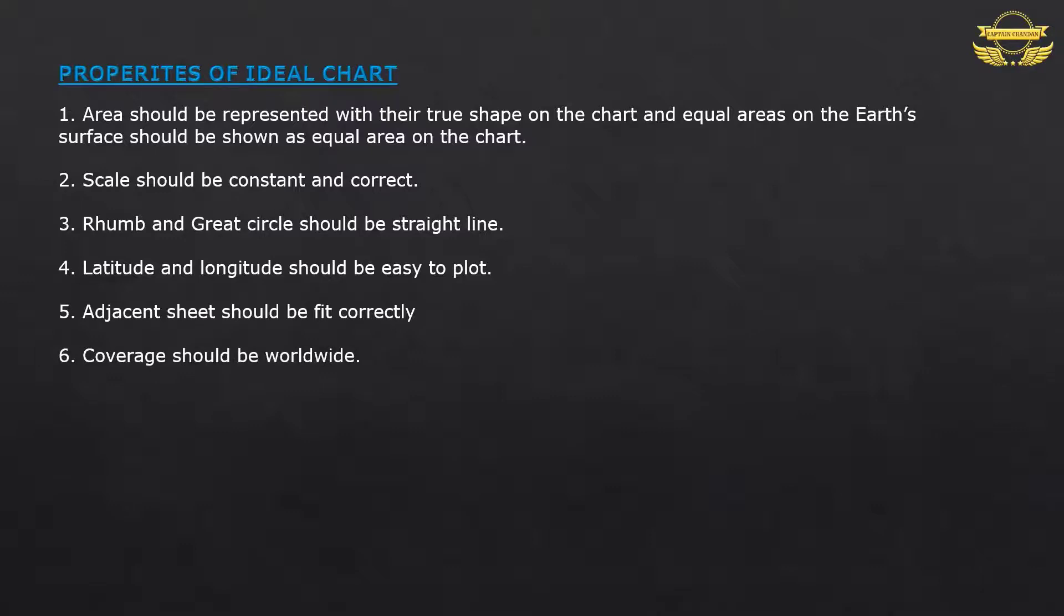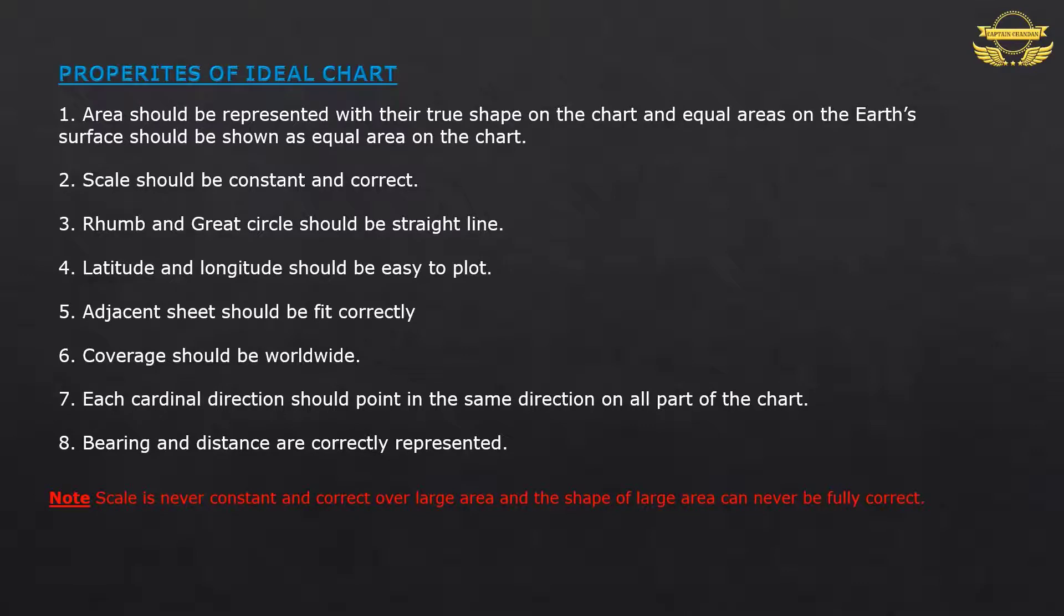6. Coverage should be worldwide. Each cardinal direction should point in the same direction on all parts of chart. Here cardinal points means North, South, East and West. 7. Bearing and distance are correctly represented. Note: scale is never constant and correct over large areas, and the shape of large areas can never be fully correct.